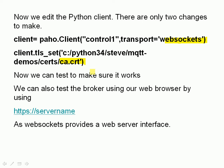We can test it with the Python client to make sure it works, and we can test it using our web browser by using HTTPS with the server name. When you connect to the web server like this, if you're using a self-signed certificate or a certificate you've created yourself, then you might get a nag screen telling you it doesn't trust the certificate — all you have to do is override that. If you're using a commercial certificate with the CA built into the browser, you won't get it at all; it should just proceed normally.